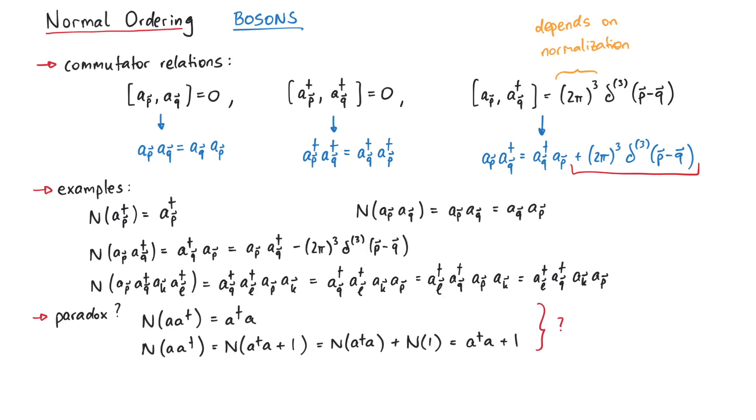One way of resolving this is to claim that normal ordering is no linear operation. So we cannot separate the normal order of a sum into the sum of a normal order. But this is not the case. In fact, we must not use canonical commutator relations inside a normal order.